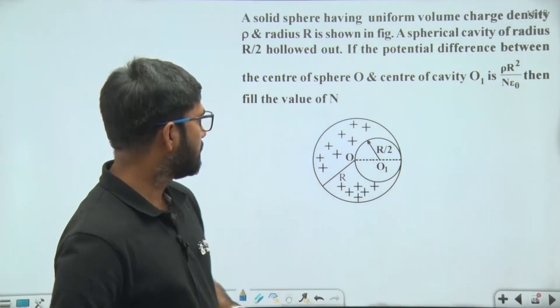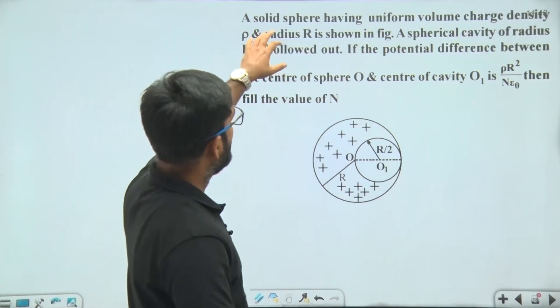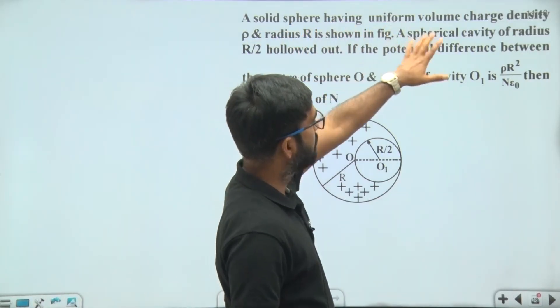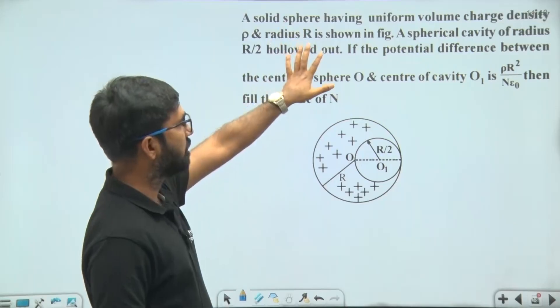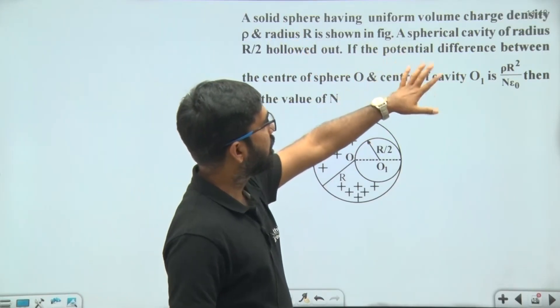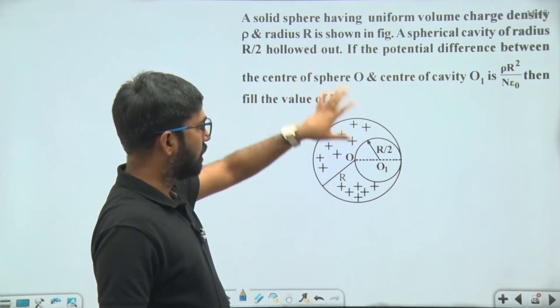My dear students, in this question it is given that a solid sphere having uniform volume charge density rho and radius R. A spherical cavity of radius R by 2 hollowed out.